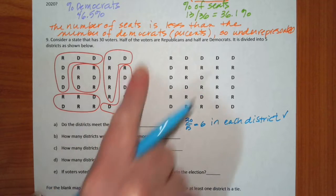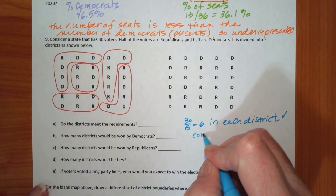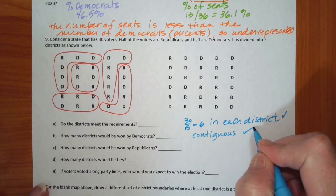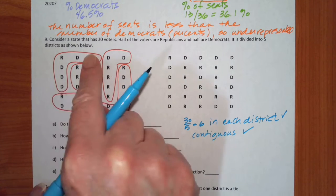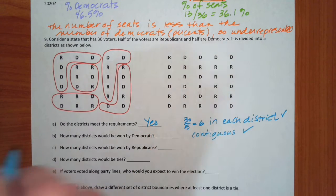So that's good, because if I count these up, there's six in each one. And is it contiguous? Yes, because all the representatives, none of the districts are split. So yes, it does meet the requirements.